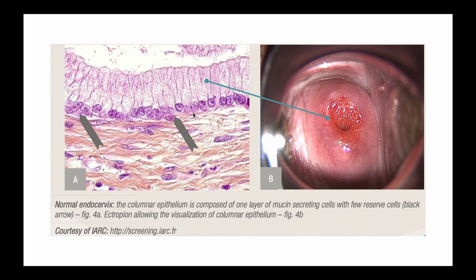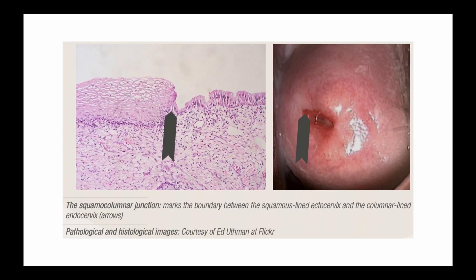This is how the endocervix looks histologically. The squamous columnar junction is the boundary found between the squamous-lined ectocervix and the columnar-lined endocervix. On this diagram, the arrow is pointing to the boundary between the squamous epithelium and the columnar epithelium — here being the columnar epithelium and above it the squamous epithelium.